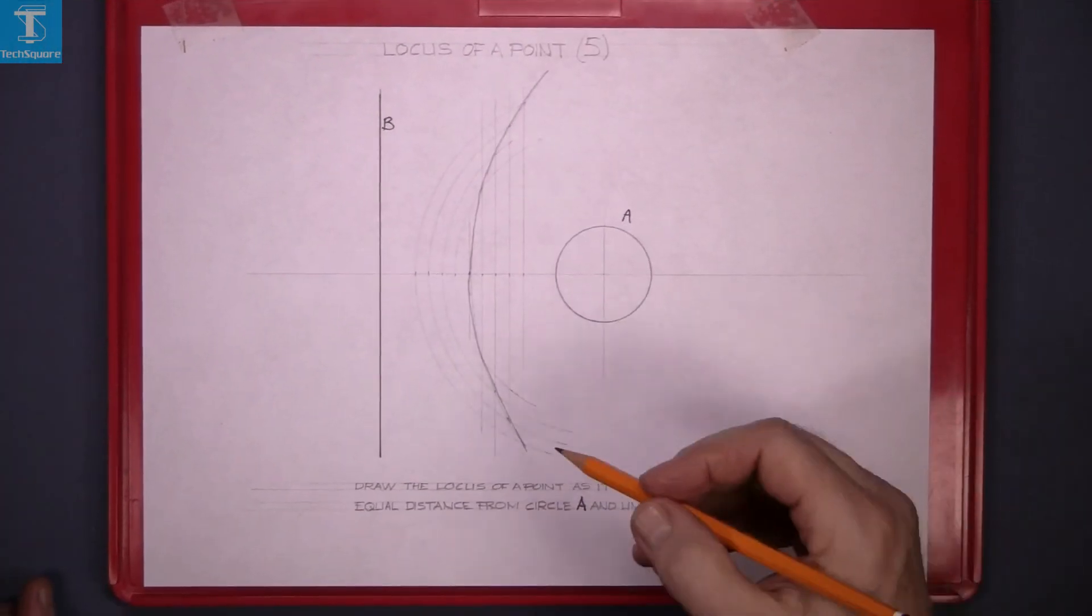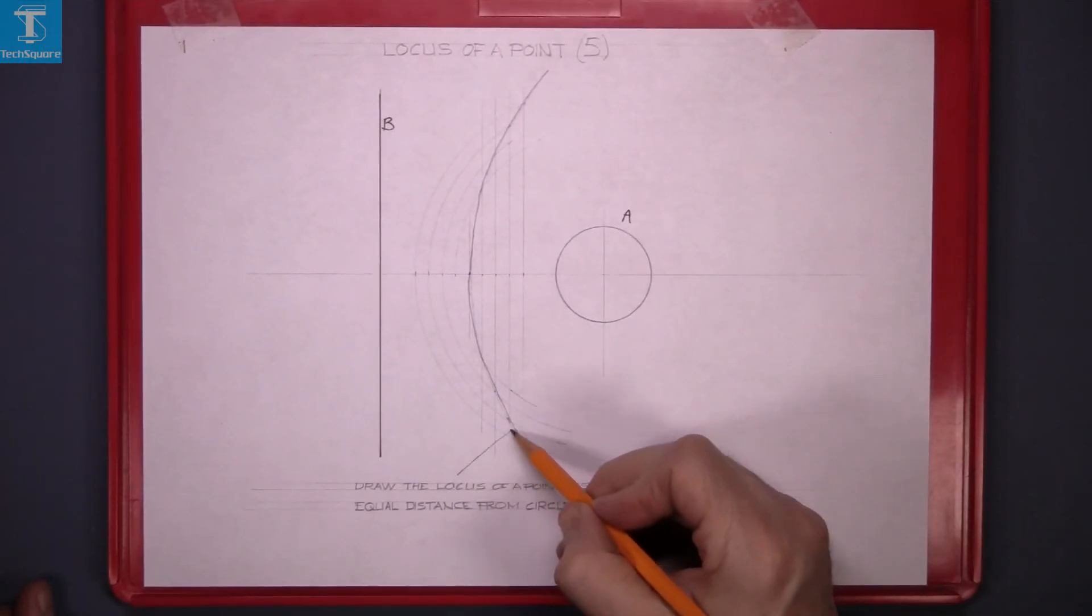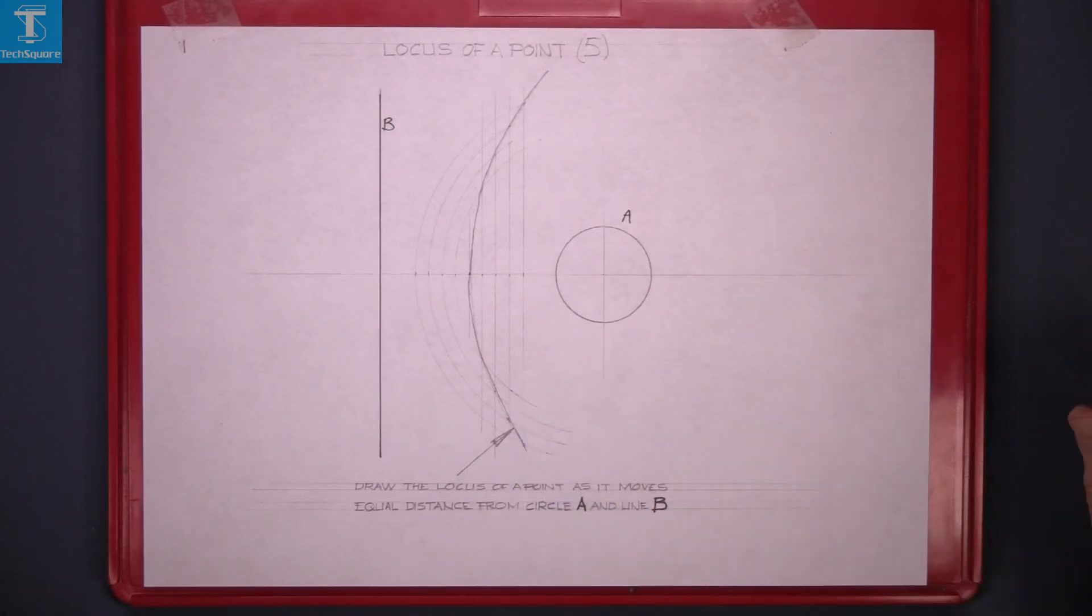That's your question finished. The locus of a point 5 is complete.